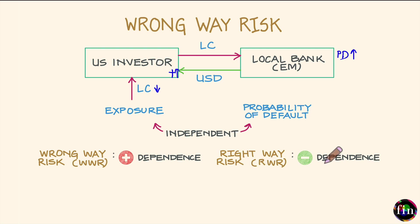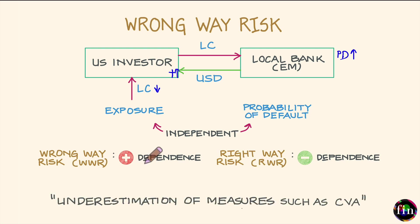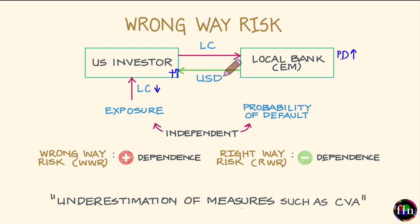As a takeaway of this video — a quick introduction to wrong way risk — one has to remember that wrong way risk becomes worrisome for a modeler of counterparty credit risk because if you were to ignore the positive dependence between exposure and probability of default, you will end up underestimating measures such as CVA, credit valuation adjustment. If your true situation is a wrong way risk situation and you assume exposure and probability of default are independent, you will be underestimating your CVA.